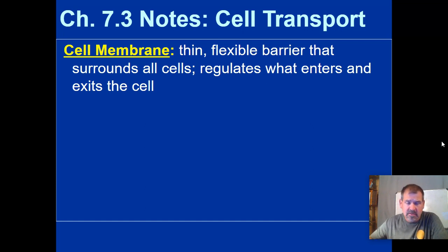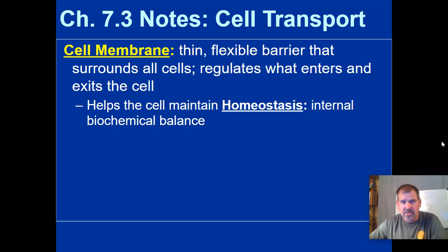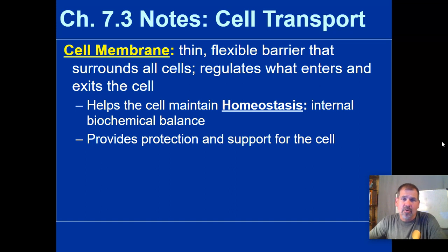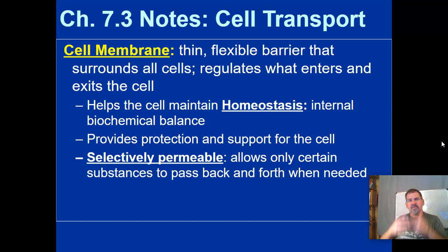The cell membrane defines the boundary of the cell — and by extension, the boundary of life. The cell membrane helps the cell maintain homeostasis, which is internal biochemical balance — like Goldilocks, not too hot, not too cold, just right. It also provides protection and support for the cell. The cell membrane is selectively permeable, meaning it allows only certain substances to pass back and forth when needed.